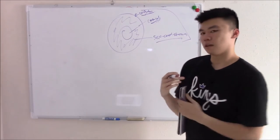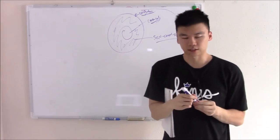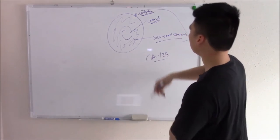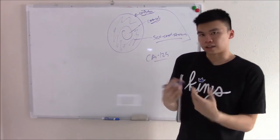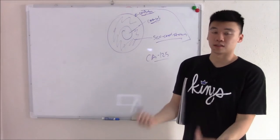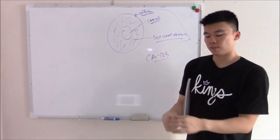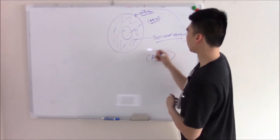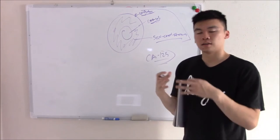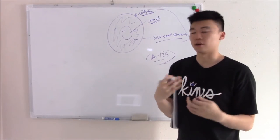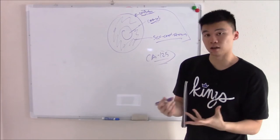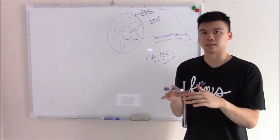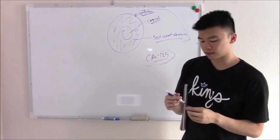In ovarian tumors, they like to release a glycoprotein called cancer antigen 125, CA-125. This is nonspecific and can be raised in a lot of things. We don't use it to diagnose, but it's helpful for monitoring treatment options and progression.